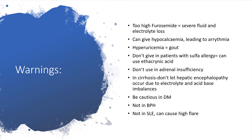Do not give furosemide to patients with sulfonamide allergy, as they will be sensitive. Use ethacrynic acid in that case. Do not use furosemide in adrenal insufficiency. In cirrhosis, prevent hepatic encephalopathy due to electrolyte and acid-base imbalances — monitor arterial blood gases, pH, and electrolyte levels. Be cautious in diabetic patients because of glycosuria and possibility of hyperglycemia. Do not give furosemide in BPH (benign prostatic hypertrophy/hyperplasia). In systemic lupus erythematosus, furosemide may not be the best choice because it can cause increased flare.